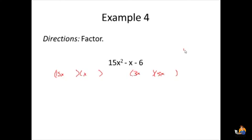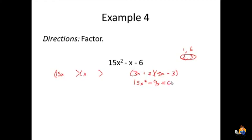The factors of 6 are 1 and 6, and 2 and 3. A 3 can't go with the 3x factor because that would create a GCF, and for the same reason a 6 can't go with the 3x term. So I'll either put 1 or 2 there. Let's try the factors closer together: put 2 there and 3 here. Randomly putting in signs — I know they have to be different — so plus here and minus there. FOILing that out gives 15x squared, 3x times negative 3 is negative 9x, and 2 times 5x is 10x. Combining the middle terms gives plus x, so let's try switching the signs.